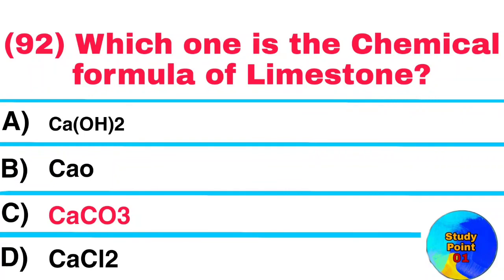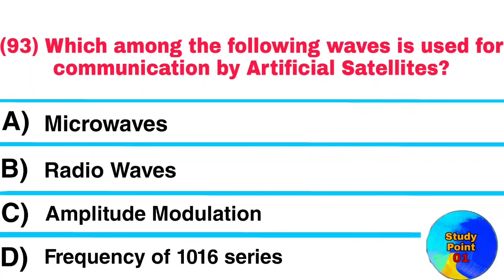Question No. 93. Which among the following waves is used for communication by artificial satellites? Answer: Microwaves.